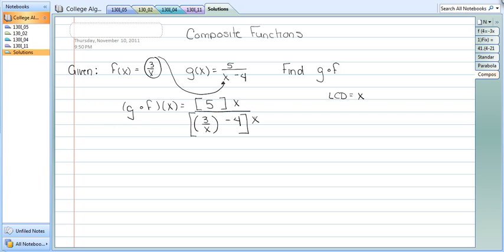Now when we multiply by x over x, that's really just multiplying by 1, so we're not altering the fraction or changing it. On top, we have 5x, and on the bottom, you're going to distribute the x through to those two terms down there. So 3 times x divided by x is just going to be 3, and negative 4 times x is negative 4x.